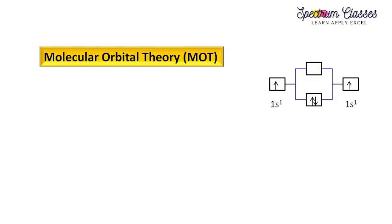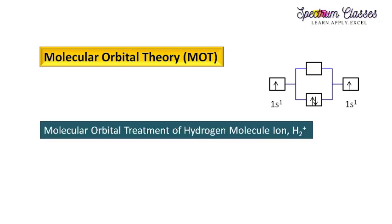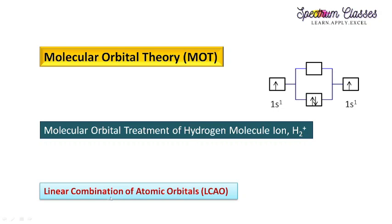Hello everyone, welcome back to Spectrum Classes. In this video we are going to discuss molecular orbital theory. In my previous video we discussed valence bond theory and its quantum mechanical treatment. The quantum mechanical treatment of molecular orbital theory will be discussed here by considering the molecular orbital treatment of the hydrogen ion molecule H₂⁺. We will also discuss the linear combination of atomic orbitals (LCAO), a term used frequently in molecular orbital theory.